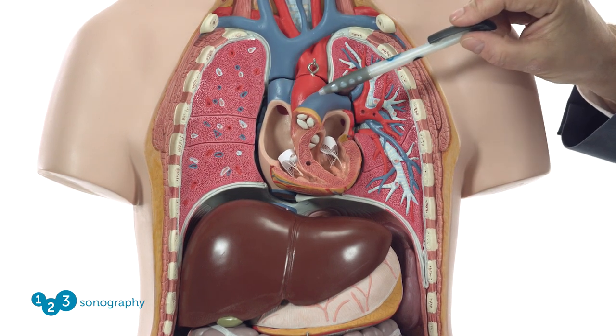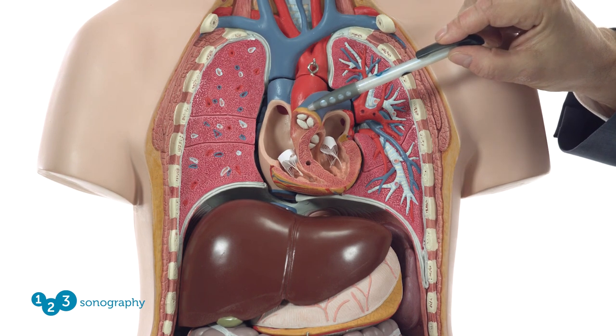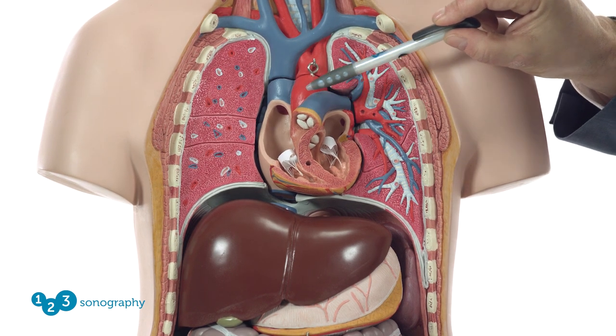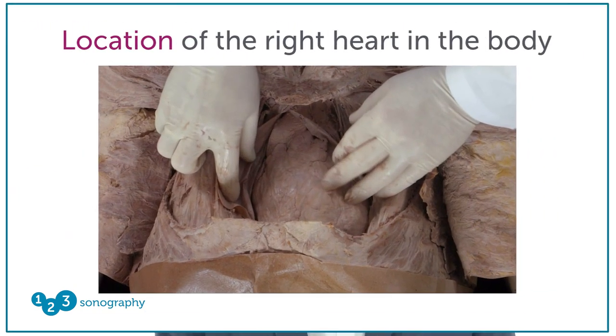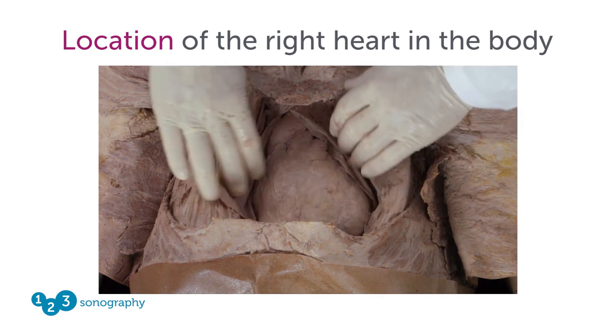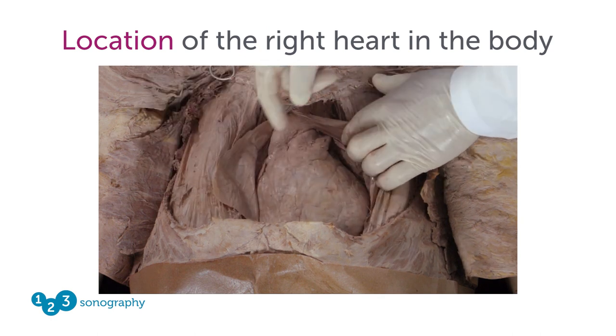Another very important point to consider is that the pulmonary artery is actually anterior to the aortic artery. This will be important especially when we take a look on the echocardiogram, when we try to interpret the structures there. Let's take a closer look at the structures we see in a so-called body donor, a corpse. If we open up the pericardial sac here, we'll see the right heart right in front.